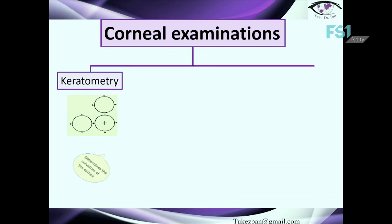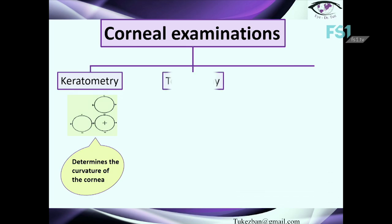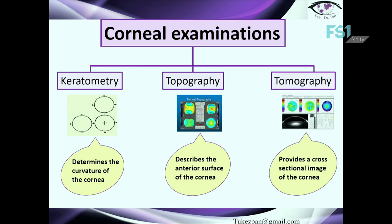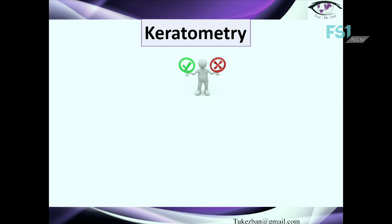The next examination is keratometry, which provides information about the curvature and keratometric power of the cornea. Another important examination is topography, which describes the anterior surface of the cornea. Finally, tomography provides a cross-sectional image of the cornea. Let's now talk about keratometry.